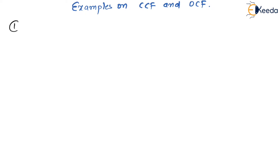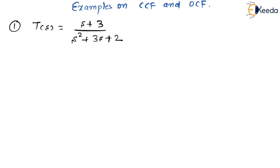Let me consider the first transfer function: T is equal to (S + 3) divided by (S² + 3S + 2). You are expected to find the CCF and OCF of the same. Let us see how to do that.